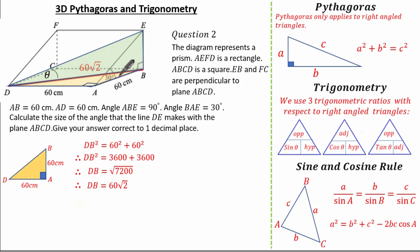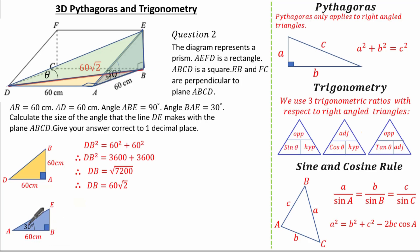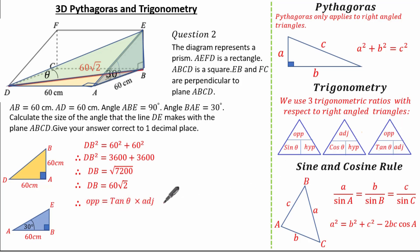I also spot another right-angled triangle — triangle AEB. The question states angle BAE is 30 degrees. Using this right-angled triangle with the 30-degree angle and length 60 cm, I can find length EB. The opposite and adjacent relationship means I'll use tan. To find the opposite it's tan theta multiplied by the adjacent. So BE equals tan 30 multiplied by 60, giving BE equals 20 root 3.